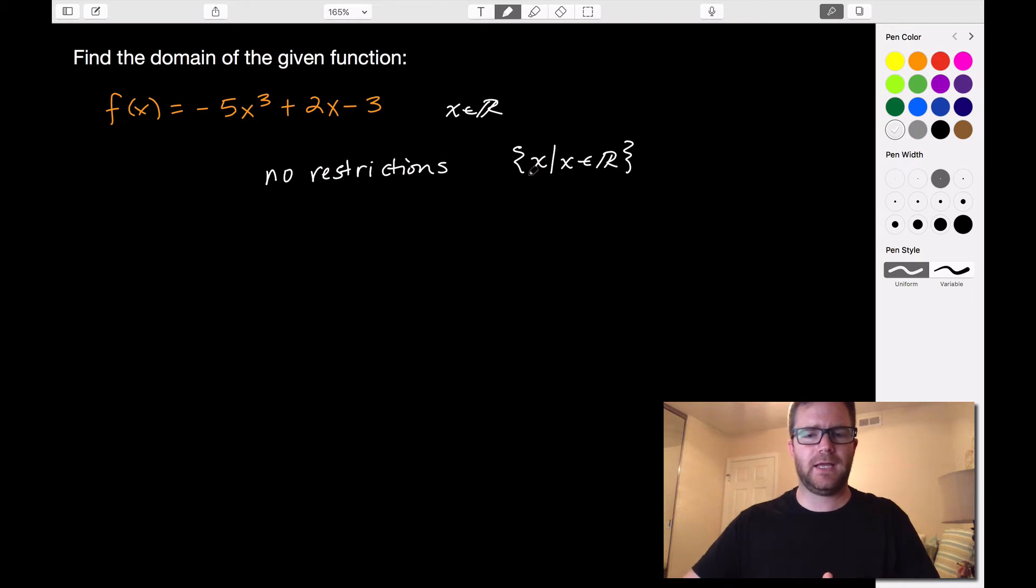Now what does that look like in interval notation? In interval notation, that's going to be all values from negative infinity to positive infinity. So again, like we said, we read it as if we were reading on a number line. So we go from the smallest number, which is negative infinity, all the way up to the largest number, which is positive infinity.